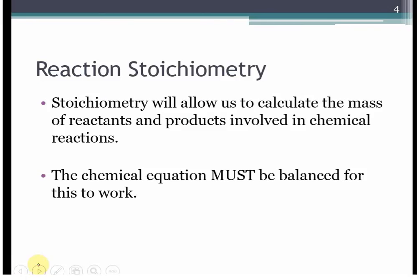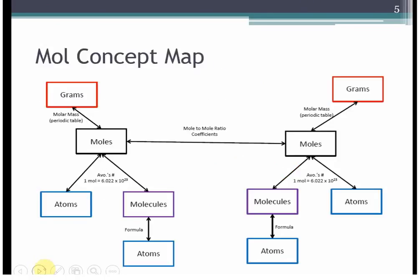Reaction stoichiometry allows us to calculate mass of reactants that are going to react and mass of products that should be produced within a chemical equation. In order for this to work, you have to balance that equation — if you do not balance your equation, all of your work is for nothing. We use the mole concept map, converting between grams and moles, and now we'll use the coefficients in our balanced equation to convert between moles of one substance and moles of another.